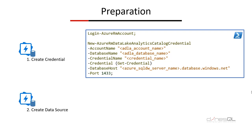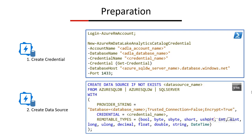Once the credential is created, you can log into Azure Data Lake Analytics to verify it. The second step is creating an external data source, which can be done using USQL. Here's the command: you start with CREATE DATA SOURCE and then the name of your data source. This command supports only three types of external data sources: Azure SQL Database, Azure SQL Data Warehouse, and SQL Server configured with Azure Virtual Machine. You may see additional types with future versions.